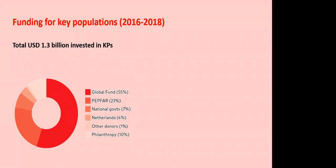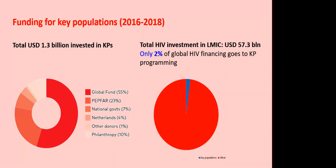In the period 2016 to 2018, $1.3 billion was invested in key populations programming. While $1.3 billion sounds like a lot, in perspective of the total funding for the HIV response, the picture is less exciting. Only 2% of the funding for HIV programming went to key populations overall. For prevention programming it was a little better — 11% — but keeping in mind the 70% burden (at that time 54%), it's still very much out of proportion.